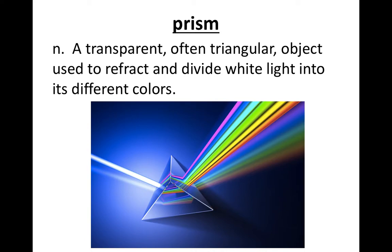Prism – a transparent, often triangular object used to refract and divide white light into its different colors.